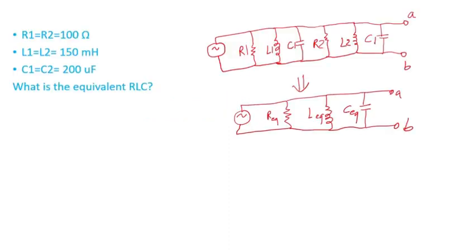In this video, I'll go through a quick example of a parallel RLC circuit with resistances, inductances, and capacitors. We'll see how we can combine these components to find the equivalent resistance, inductance, and capacitance to simplify the circuit.